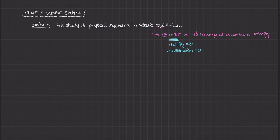When the object is moving at a constant velocity, the velocity is not equal to zero. However, because the velocity isn't changing over time, the acceleration for an object moving at constant velocity is also zero. If an object is not accelerating, it's not changing velocity. So even though there is a velocity and the object is moving relative to a reference frame, its acceleration is zero because the velocity is constant.